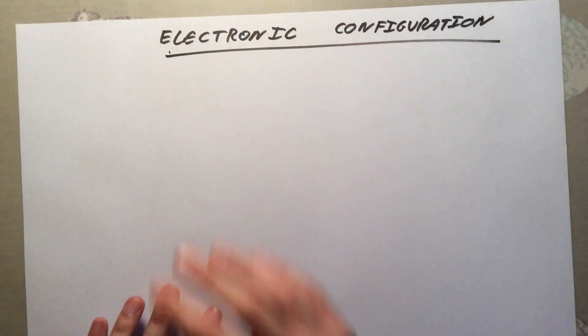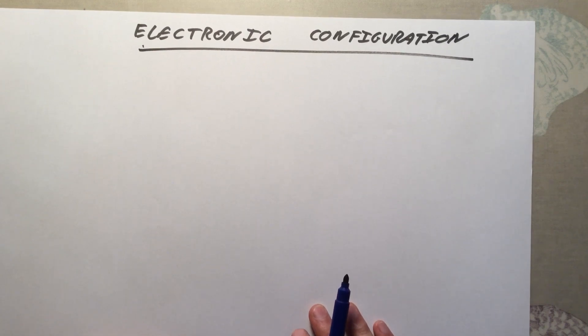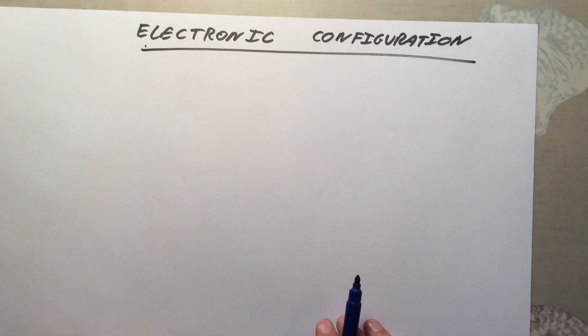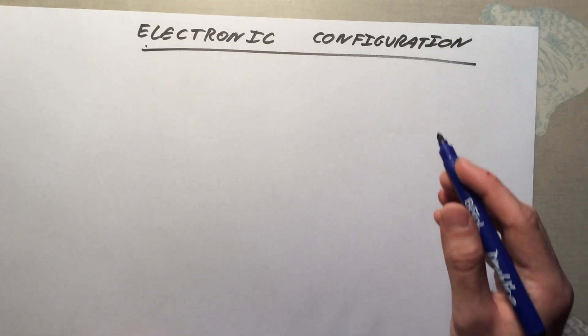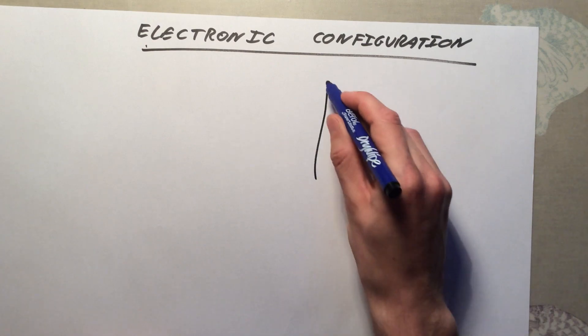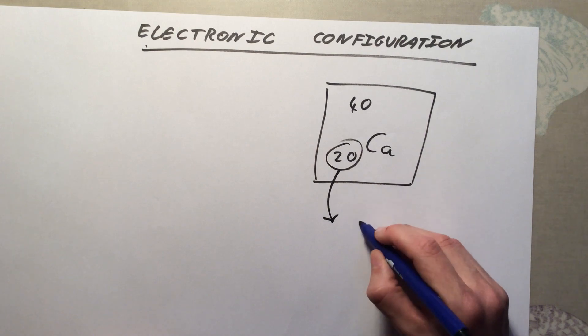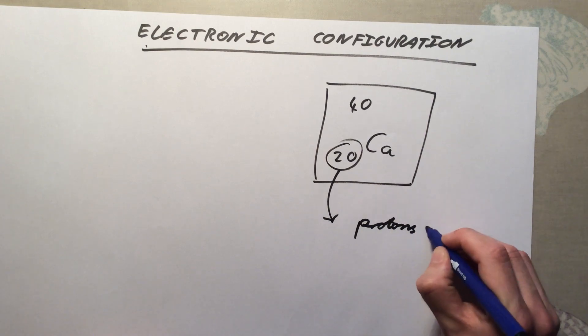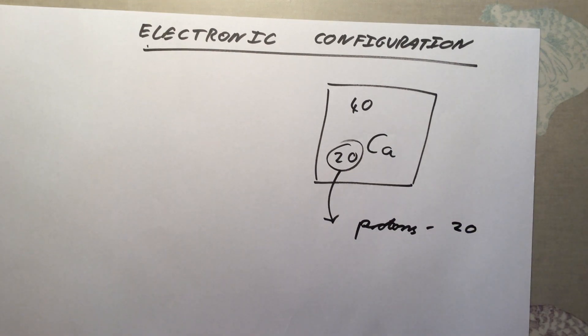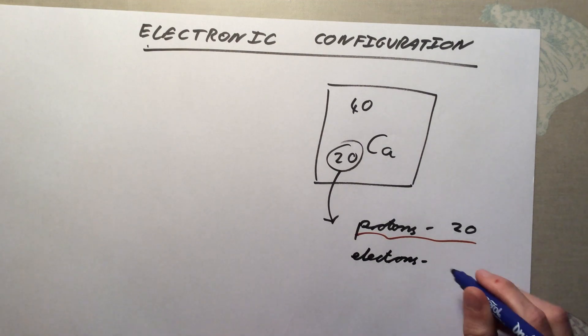This brings us to what we call electronic configuration. We said before that every positive charge you have in the atom must be canceled out by a negative charge, because overall the atom must be neutral. Let us take another example - calcium, which is 40 over 20 Ca. Quick recap from above: the atomic or proton number is 20, therefore it must have 20 protons. If it has 20 protons, 20 positives, it must have 20 electrons to cancel out that charge.